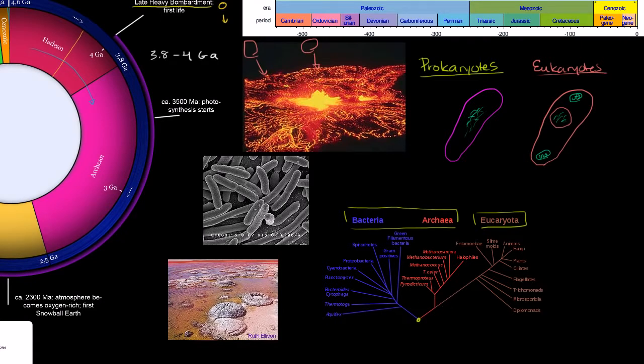And this right here, just so you can visualize it, this is an example of bacteria. This is E. coli, or Escherichia coli. It's just an example of bacteria. It comes in a bunch of shapes and forms. But it's a prokaryotic life form.